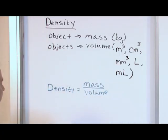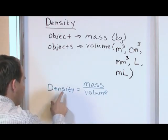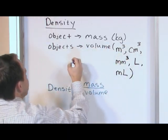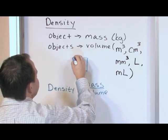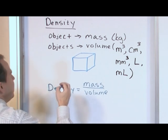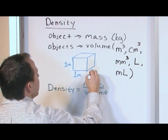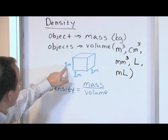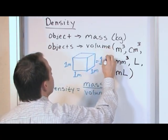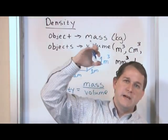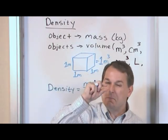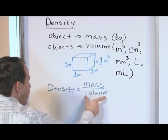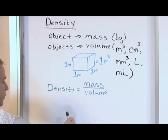So if you measure some mass, stick it in your calculator, measure a volume, stick it in your calculator, and divide those two numbers, you get the density. To visualize cubic units: a cube that is one meter on each side — one meter wide, one meter deep, one meter tall — has a volume of one cubic meter. One cubic millimeter is a cube of one millimeter on every side. When you take the mass in kilograms or grams and divide by the volume in any valid unit, you get density.